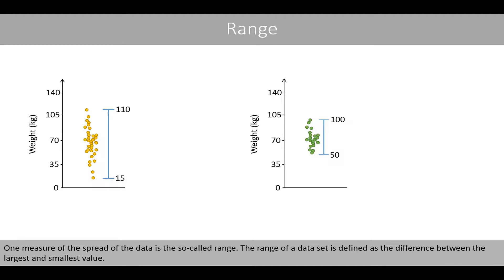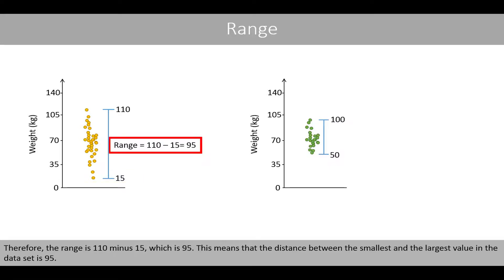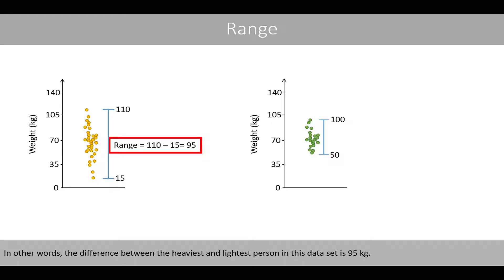One measure of the spread of the data is the so-called range. The range of a data set is defined as the difference between the largest and the smallest value. For example, the largest value of this data set is 110 and the smallest value is 15. Therefore, the range is 110 minus 15, which is 95. This means that the distance between the smallest and the largest value is 95 — in other words, the difference between the heaviest and lightest person is 95 kilos.